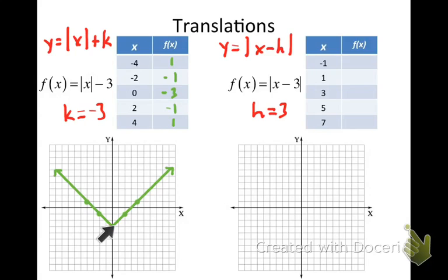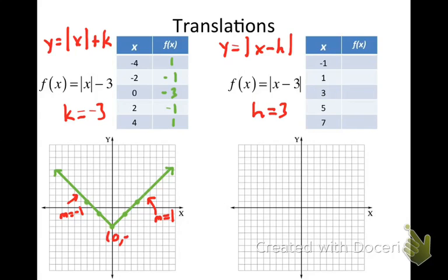Here's the graph — it opens upward, which makes sense since a would be positive 1. The slope of the right side is positive 1, and the slope of the left side is negative 1. What's changed is the location of the vertex. The effect of k was to move the vertex down — since k was negative 3, the vertex is now at 0, negative 3. The value of k always corresponds with the y-coordinate of the vertex.